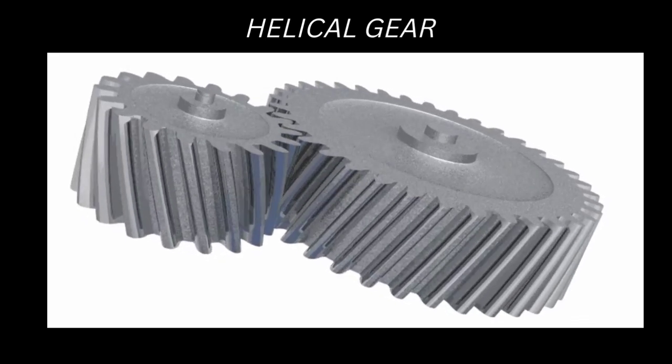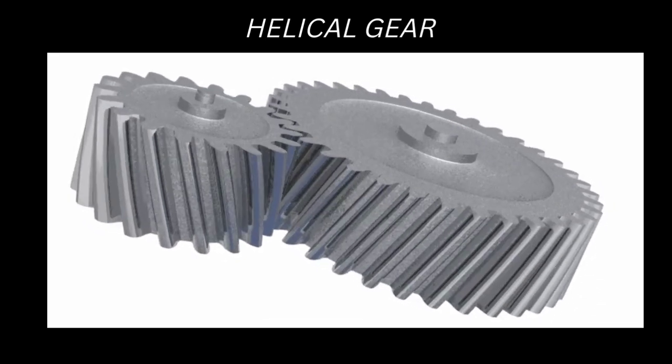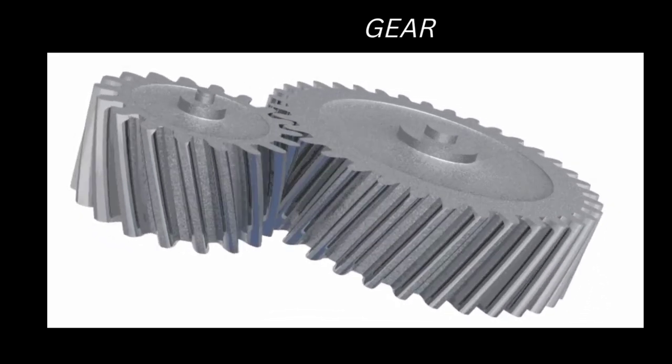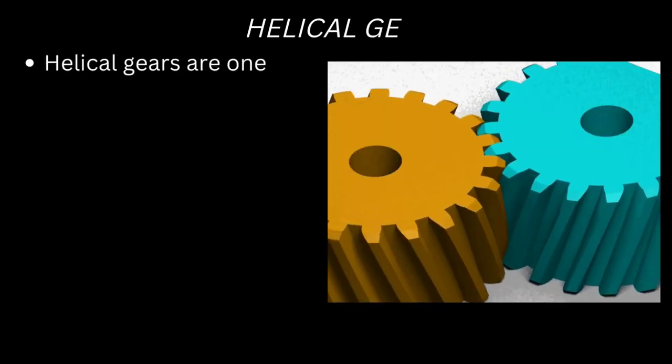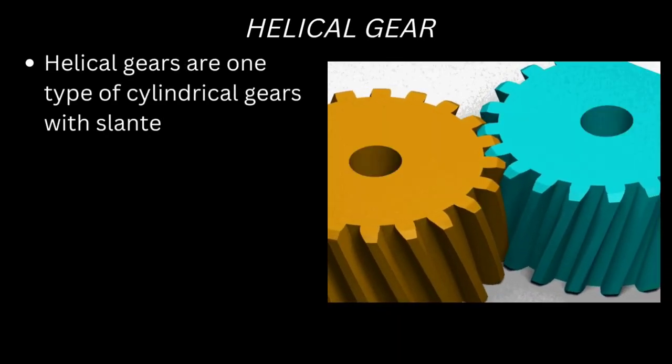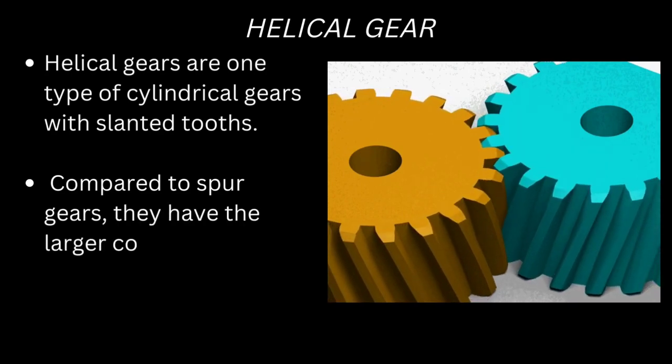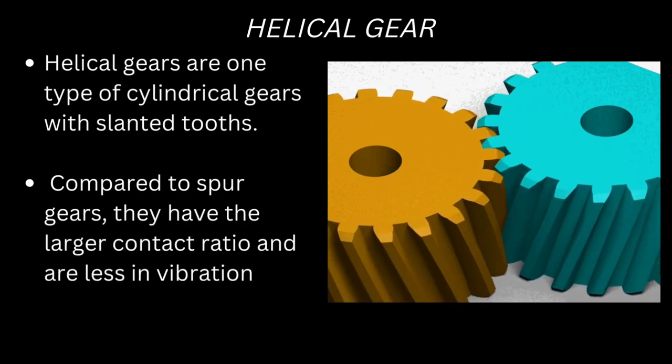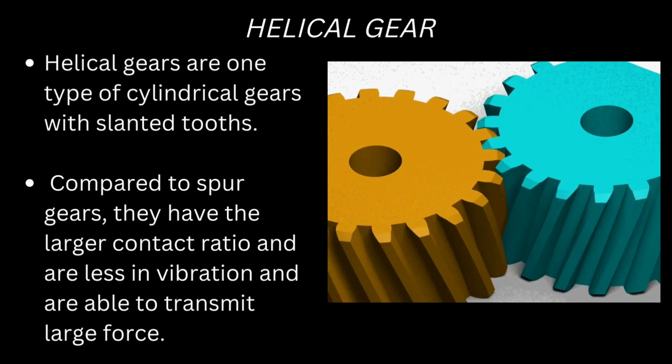Helical gears are one type of cylindrical gears with slanted teeth. Compared to spur gears, they have a larger contact ratio, less vibration, and are able to transmit large forces.